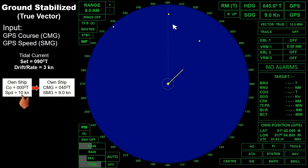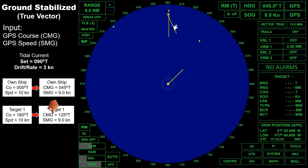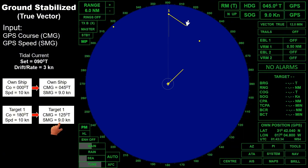Let's proceed to Target 1. This is her course and speed if there is no existing current — the true vector shows a course of 180 degrees true at a speed of 10 knots. But due to existing current, this is her course and speed made good. The true vector shows a course made good of 125 degrees true with a speed made good of 9 knots. Looking at the radar display, it looks like we are in a crossing situation, not a head-on situation.